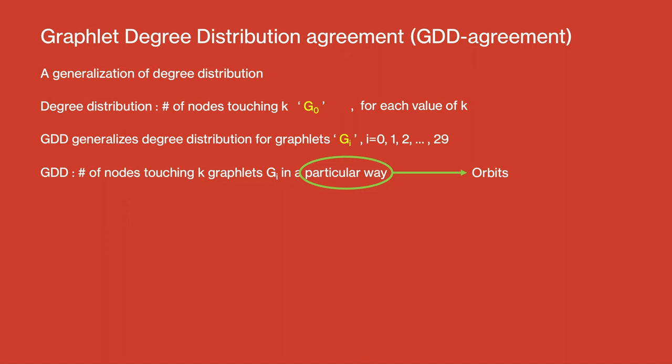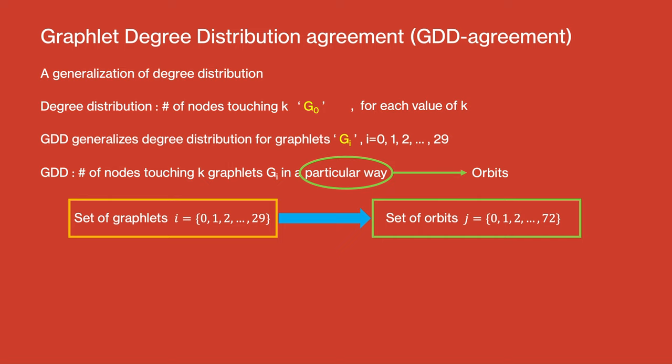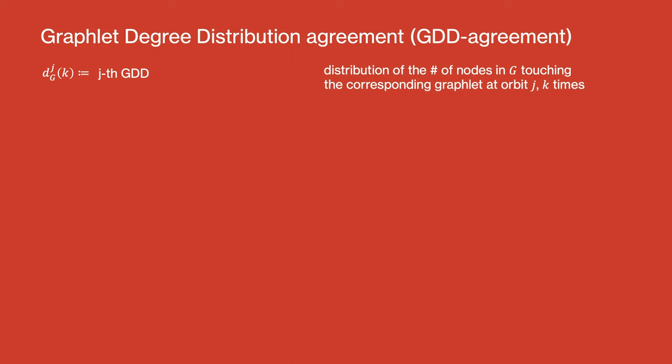Thus, from here we shift from the index i which is from 0 to 29 and represents set of graphlets to index j which is from 0 to 72 and represents the set of orbits. The jth GDT is the distribution of the number of nodes in G touching the corresponding graphlet at orbit j, k times. It is denoted by d_j(G)(k).